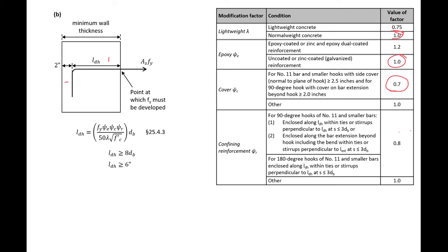And then we don't know any information on our confining reinforcement, so for this we're just going to take 1.0. But if we had some confining reinforcement, then we may be able to take an additional 20% reduction for our development length.